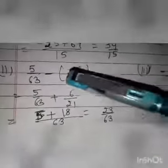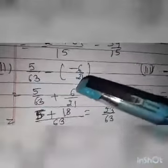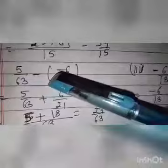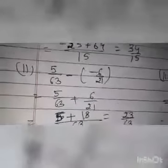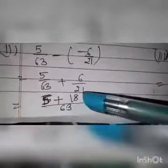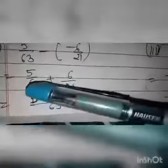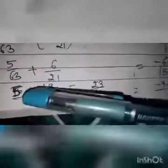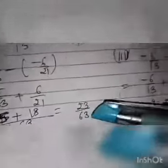Second part is 5 by 63 minus in bracket minus 6 by 21. There is one minus outside the bracket and one minus inside the bracket; minus multiplied by minus becomes plus. Now the statement is 5 by 63 plus 6 by 21. LCM of 63 and 21 is 63. Divide 63 by 1 and multiply 1 by 5 to get 5. Plus: in 21's table, 63 comes at 3; multiply 3 by 6 to get 18. Both numbers have the same sign, so we add: 5 plus 18 is 23 by 63.